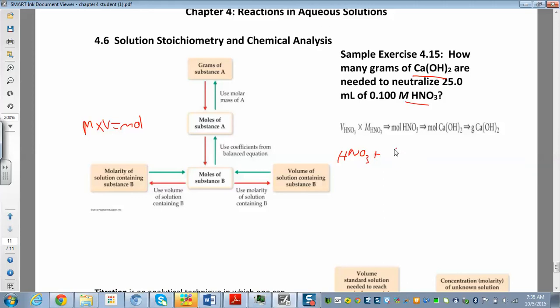I'm going to do a double replacement reaction here. So I write my cations: hydrogen is H+, I have calcium over here. The calcium is going to combine now with the nitrate, and the hydrogen with the hydroxide. So I just make water, that's liquid. To balance it, I'm going to put a 2 here and a 2 over here. So I need 2 moles of nitric acid for every 1 mole of calcium hydroxide.